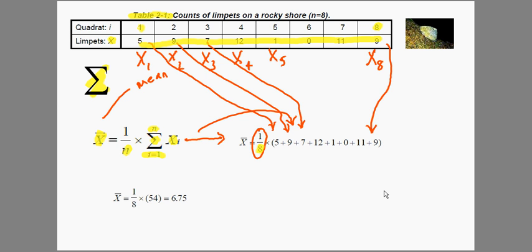Add those up we get 54. Divide that by 8. So the mean of this set of observations is 6.75.